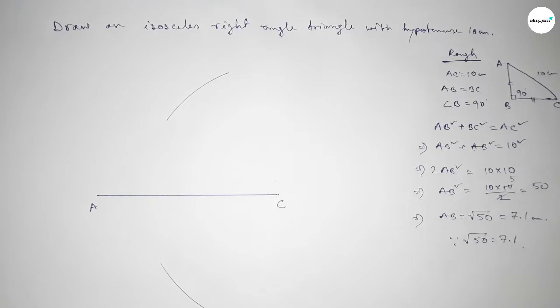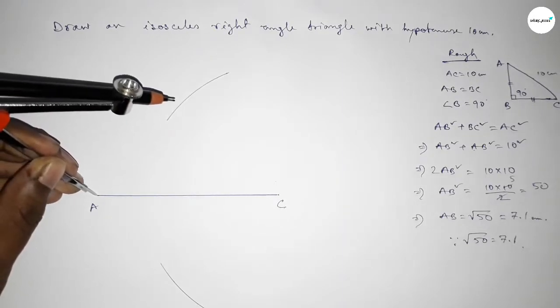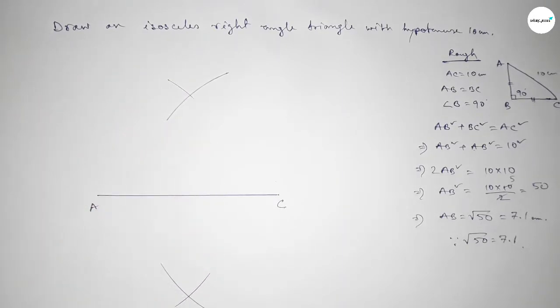And drawing an arc by this way with same length and putting the compass here and cut here and cut here, so both the curves intersect at two points.